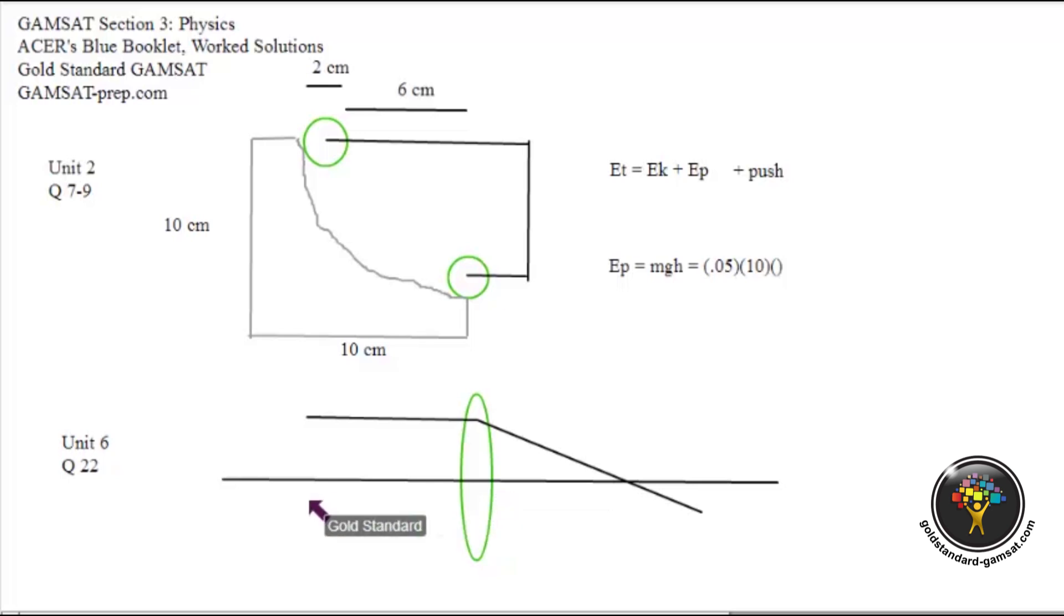Then, likewise, if you had a parallel line below the axis, like so, parallel line below the axis, then you would expect that this parallel line will converge, but now upwards, again through the focal point. There we go. Through the focal point, but it converges upwards.